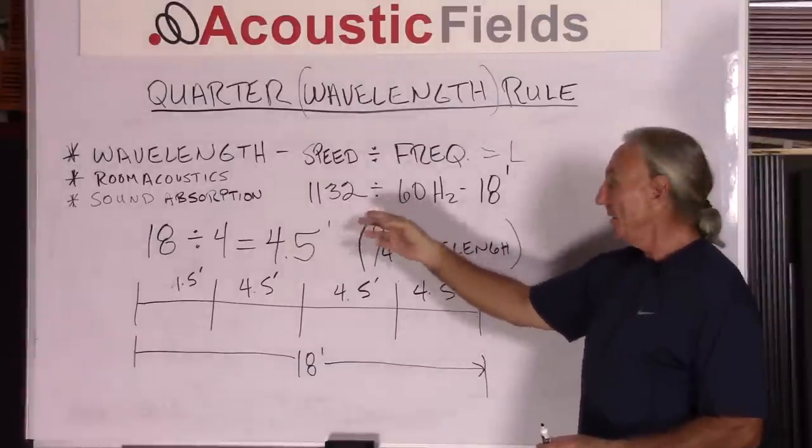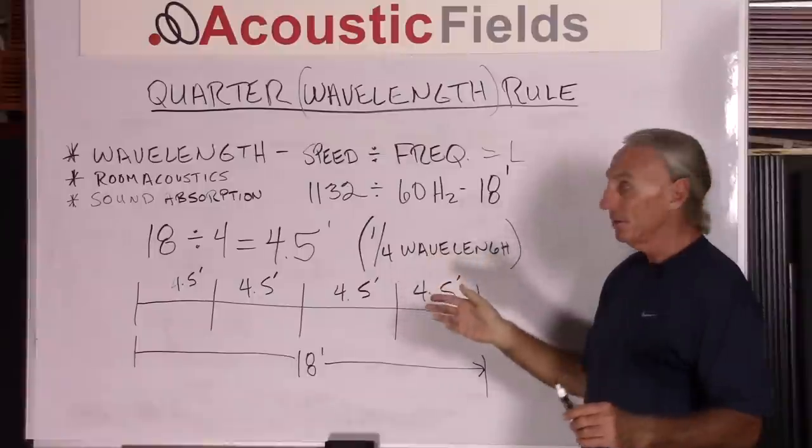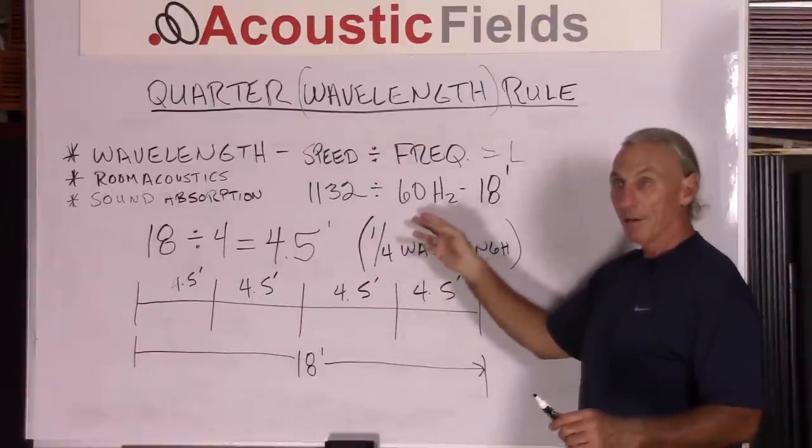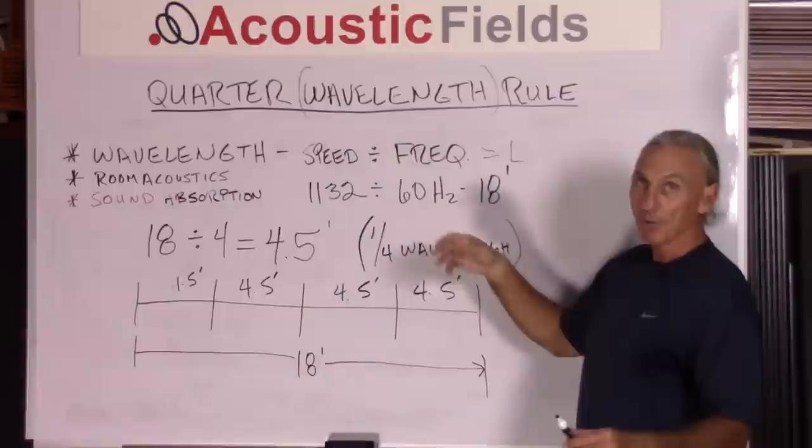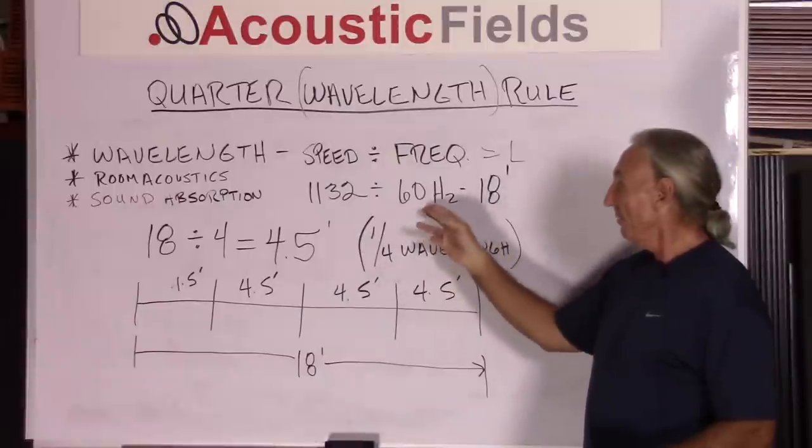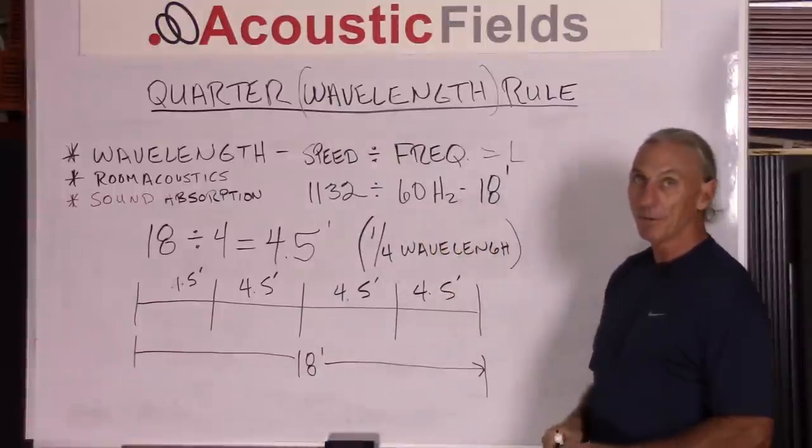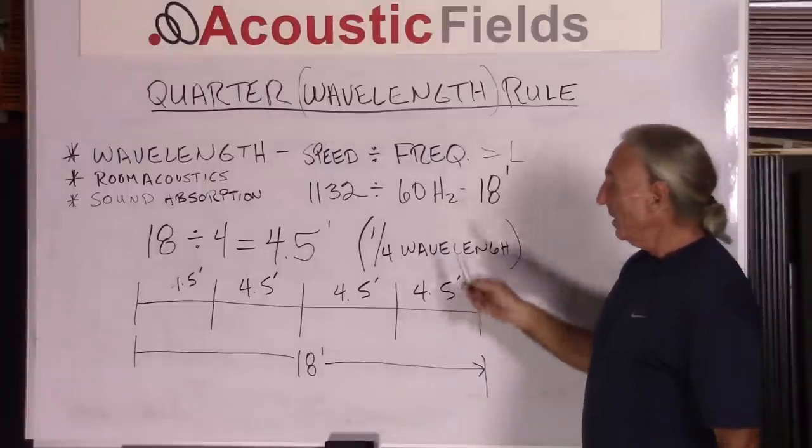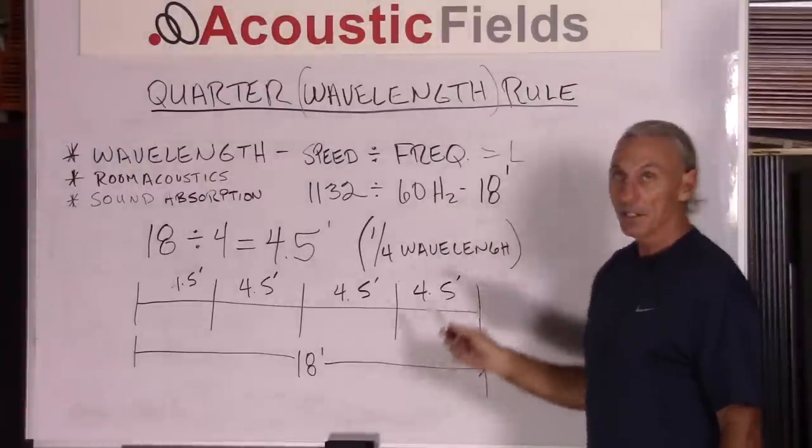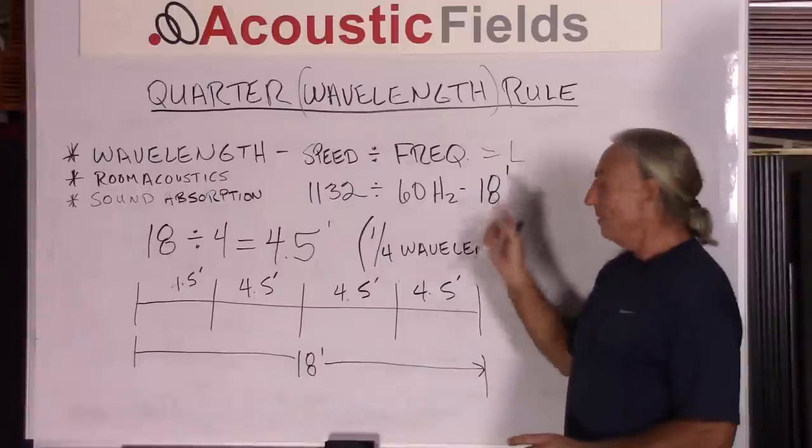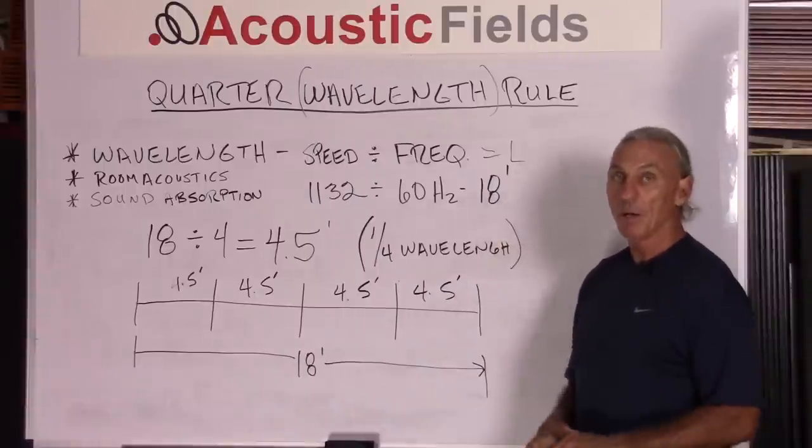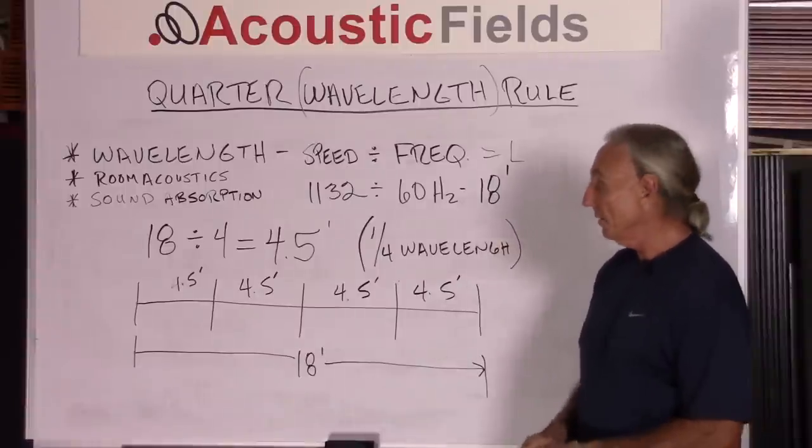Speed of sound is constant, relatively so, and we'll do a video on that moving through air with different humidities and things like that. 60 cycles, 18 foot if we do the math. So we know that our 60 cycle wave is 18 foot long, and that's really all we have to know for this particular calculation.